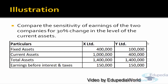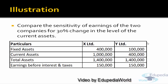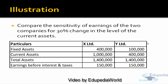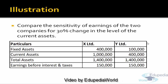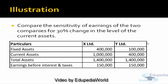Both are working at the same EBIT of 1 lakh 50,000. But since the current assets in X Limited is more and in Y Limited is less, what is the impact of 30% change? In X Limited, 3 lakh rupees, and in Y Limited, 1 lakh 20,000 rupees.